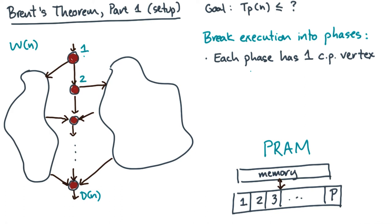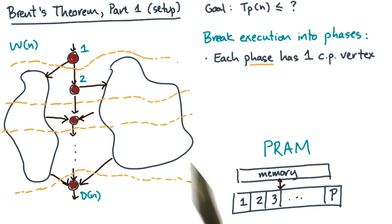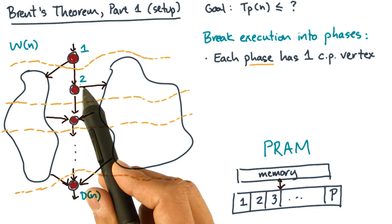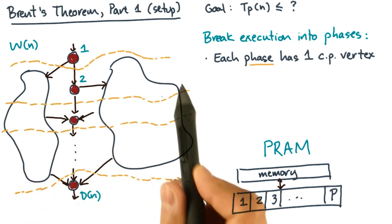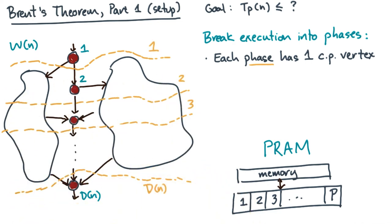Here's a cartoon of what the phases might look like. Since the critical path vertices are numbered, and there's one critical path vertex per phase, I can number the phases by the critical path vertex number. For example, here's critical path vertex two, so I'll call this phase two. That's the first condition. What about the second?